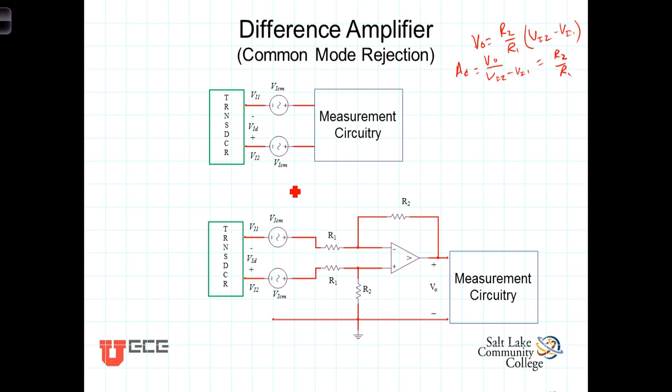Generally the voltage across the transducer leads is relatively small. Here we've got it noted as Vid which is just Vi2 minus Vi1. So I'm going to write that up here for future reference. Vid is equal to Vi2 minus Vi1.